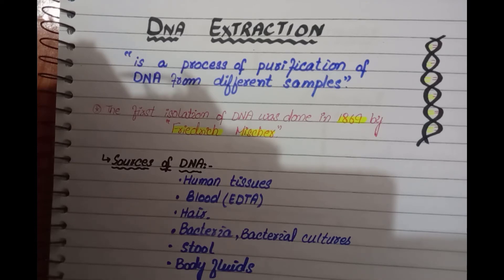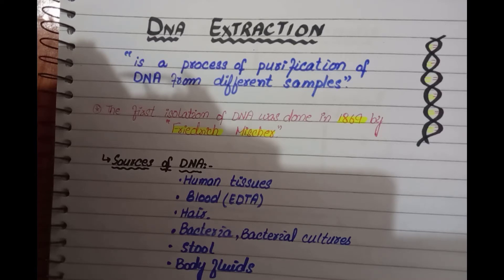DNA extraction or DNA isolation is basically a process of purification of DNA from different samples. These samples may be human tissues, hair, bacteria, stool, or body fluids. The first isolation of DNA was done in 1867 by Friedrich Miescher. So DNA extraction is essentially the process of purification of DNA from different samples.